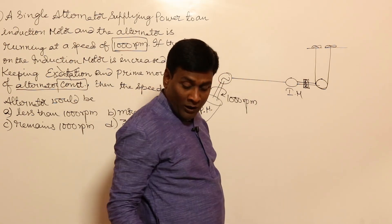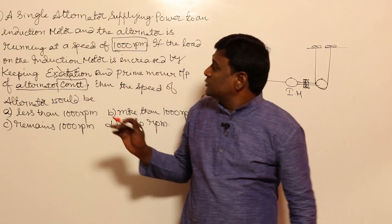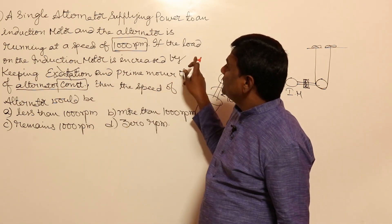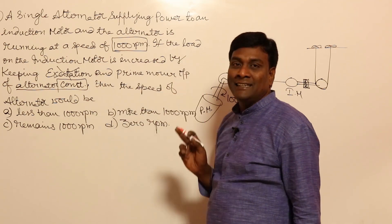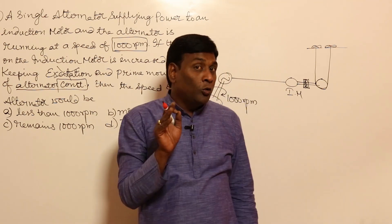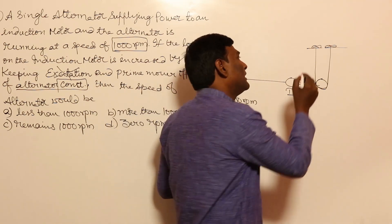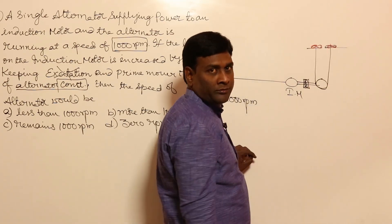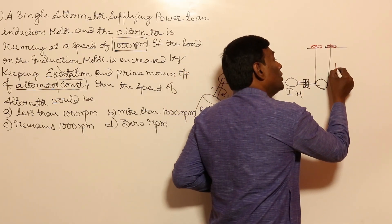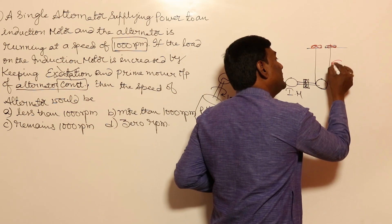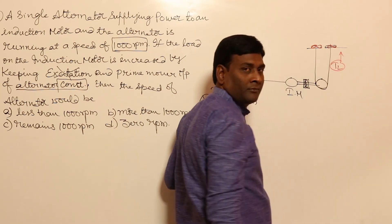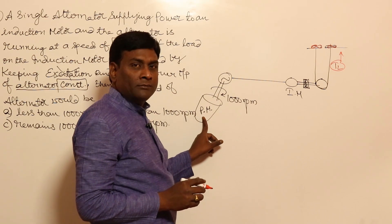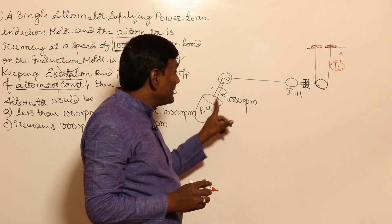The motor is rotating at 1000 rpm. If the load on the induction motor is increased, that means you are going to tighten the belt more. When you tighten the belt, the load torque is going to increase.